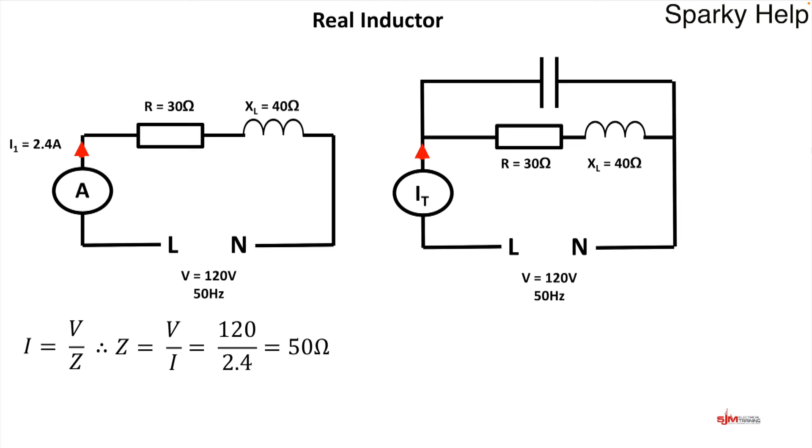Now if we put this in a circuit with a capacitor, we have got our real inductor, which we know we've got 2.4 amps. And we've got a capacitor, which is 75 Ohms, which we've used earlier.